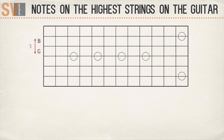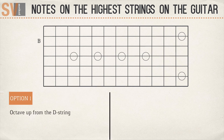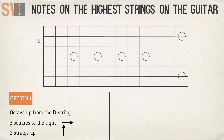There are two options to find the notes on the B string. Option 1: you octave the notes on the D string in a different way. You slide three squares to the right in the direction of the body and two strings upward. For example, if I want to play the note E on the B string, I'll first search for the note E on the D string and then slide three squares to the right and two strings upward.